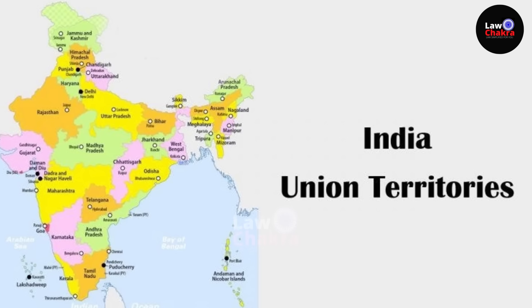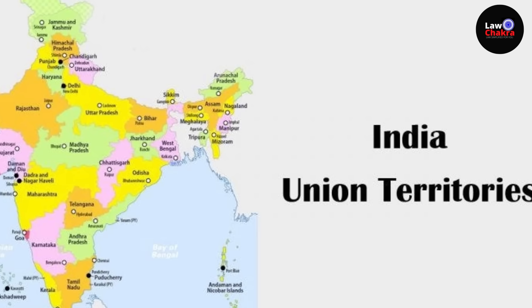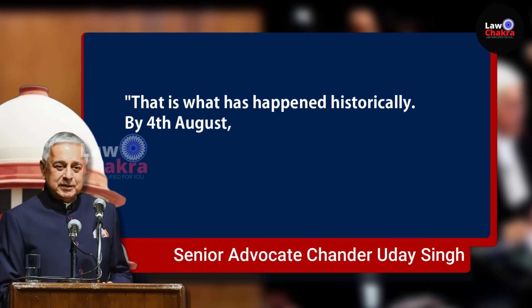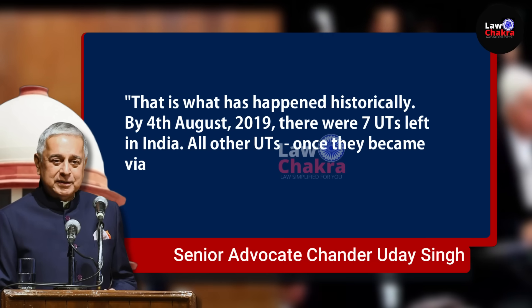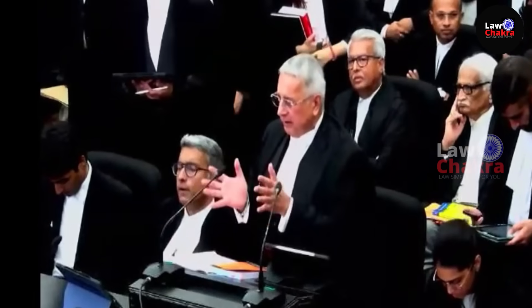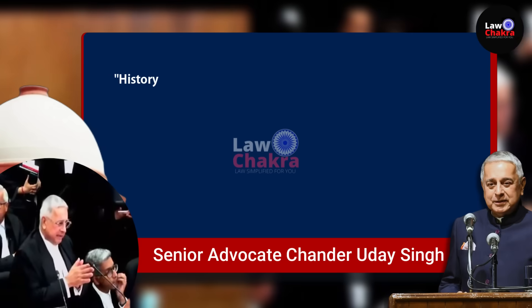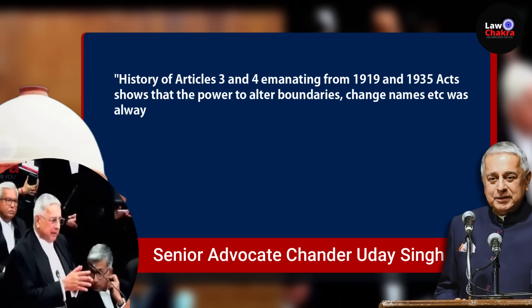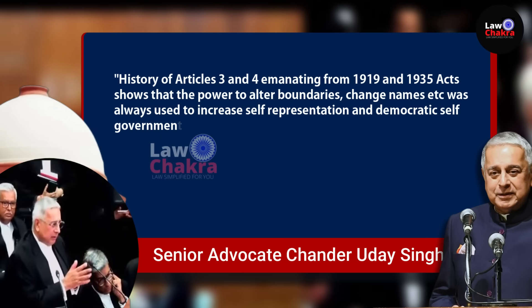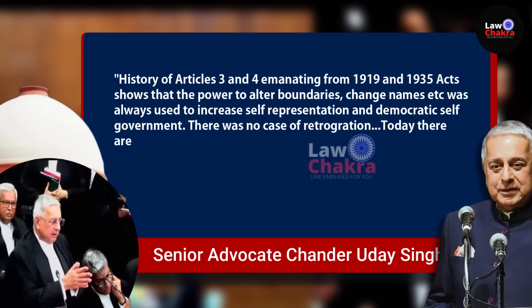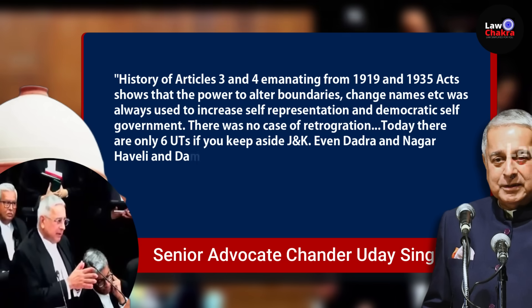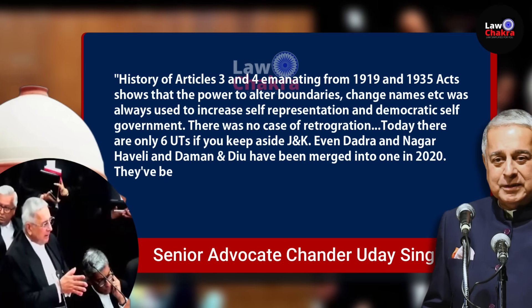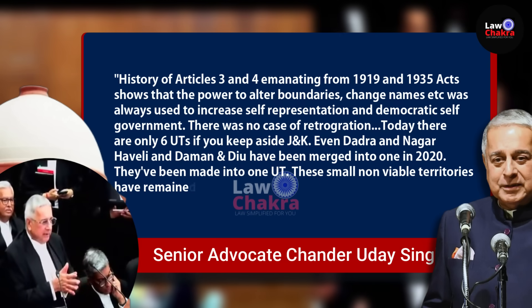7th Constitutional Amendment पास हुआ and it removed the distinctions between states and introduced the concept of UTs। जब union territories develop हुईं, उन्होंने state का दर्जा ले लिया। Singh said: 'That is what has happened historically. By 4th of August 2019, there were 7 UTs left in India. All other UTs, once they became viable units, they were converted into a state।' उन्होंने कहा कि वक्त के साथ Article 3 को ज्यादातर self-governance के लिए use किया गया था। Daman and Diu have been merged into one in 2020 — these small non-viable territories have remained which are not viable as states।